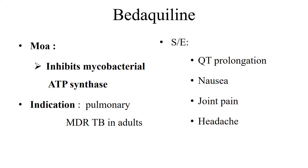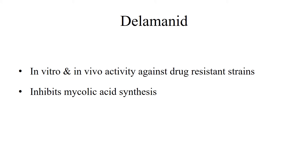Bedaquiline is a newer addition to conventional anti-TB drugs. It acts by inhibiting mycobacterial ATP synthase. The main indication is multi-drug-resistant pulmonary TB in adults. It has wide distribution in the body, and its use is associated with QT prolongation, joint pain, nausea, and headache. Delamanid inhibits mycolic acid synthesis and exhibits in vitro as well as in vivo activity against drug-resistant strains of Mycobacterium tuberculosis. Though several countries have approved its use, further studies and safety reports are required for its regular use.